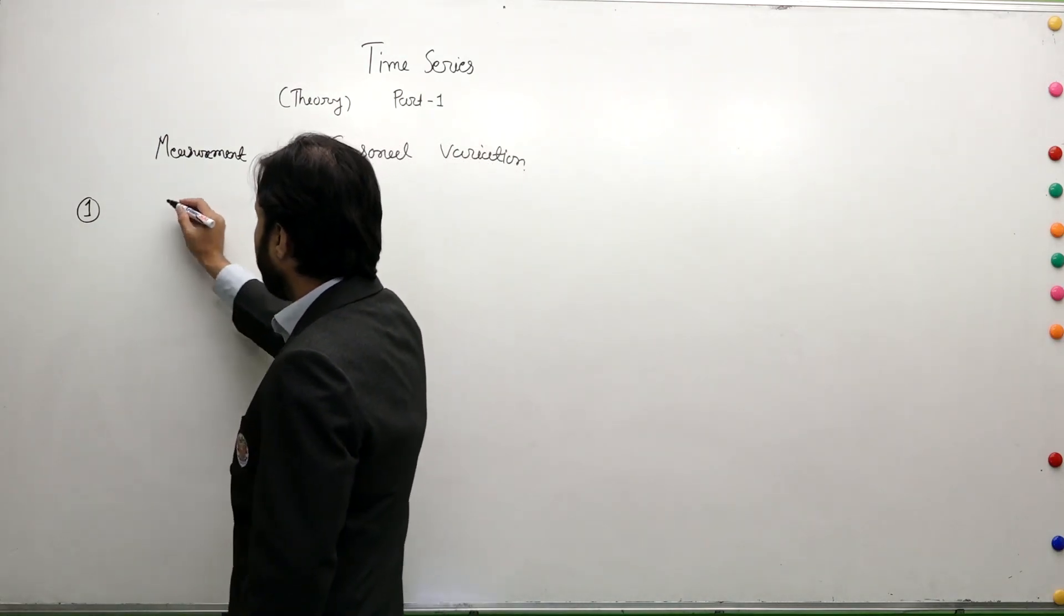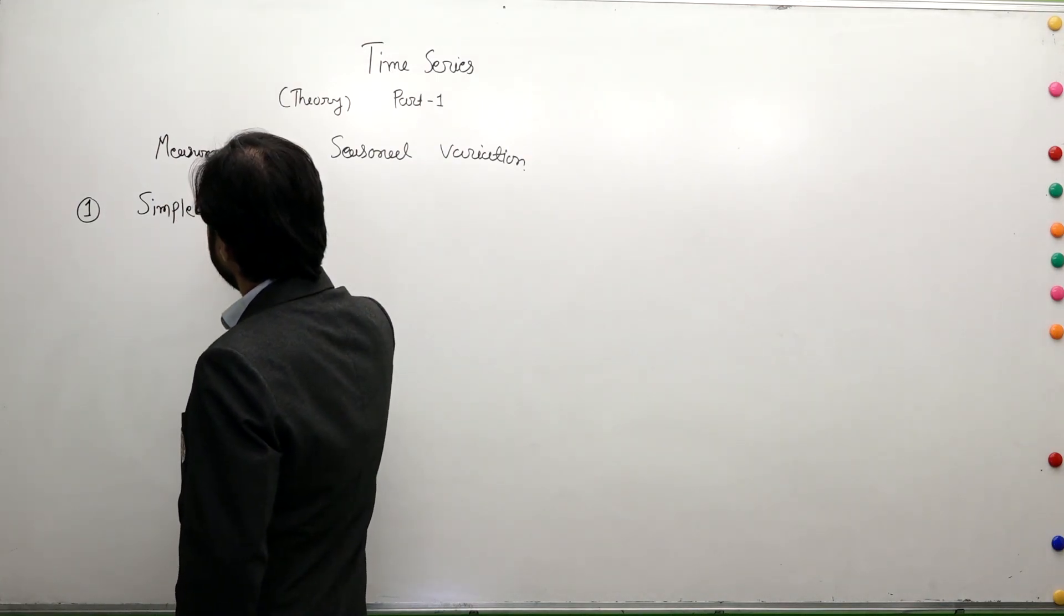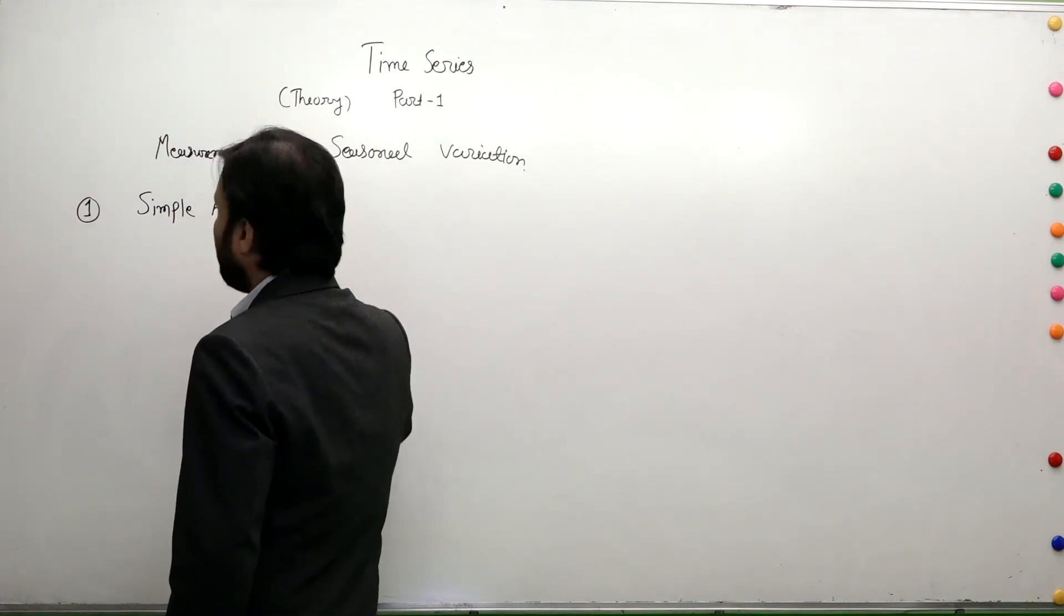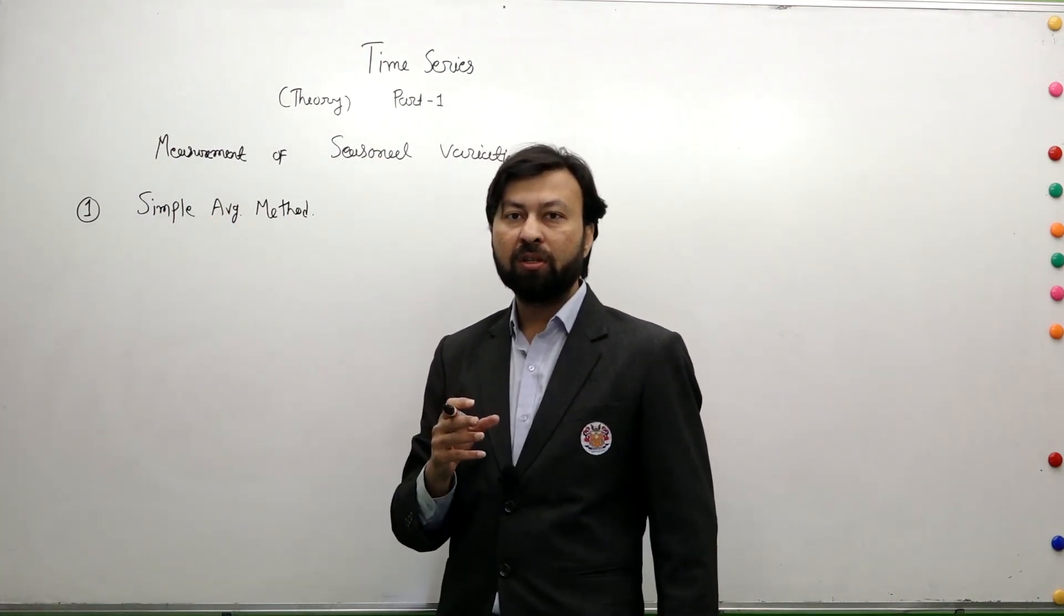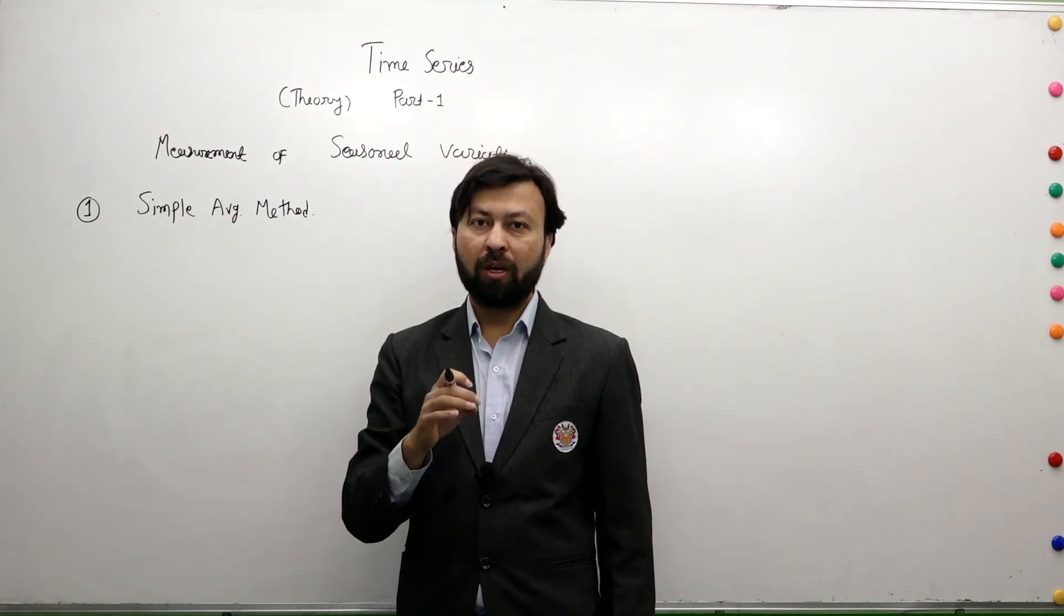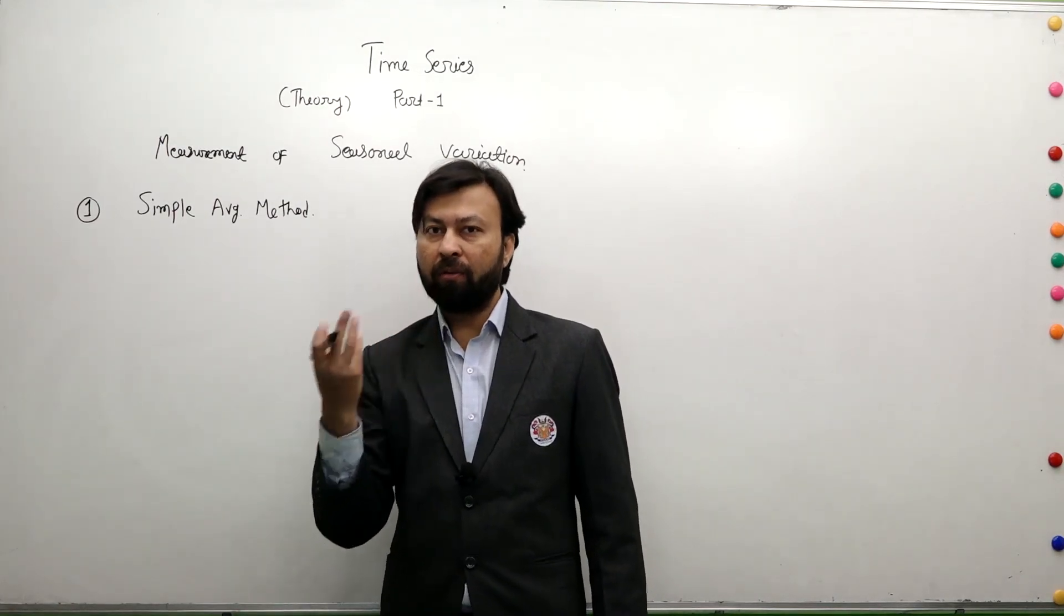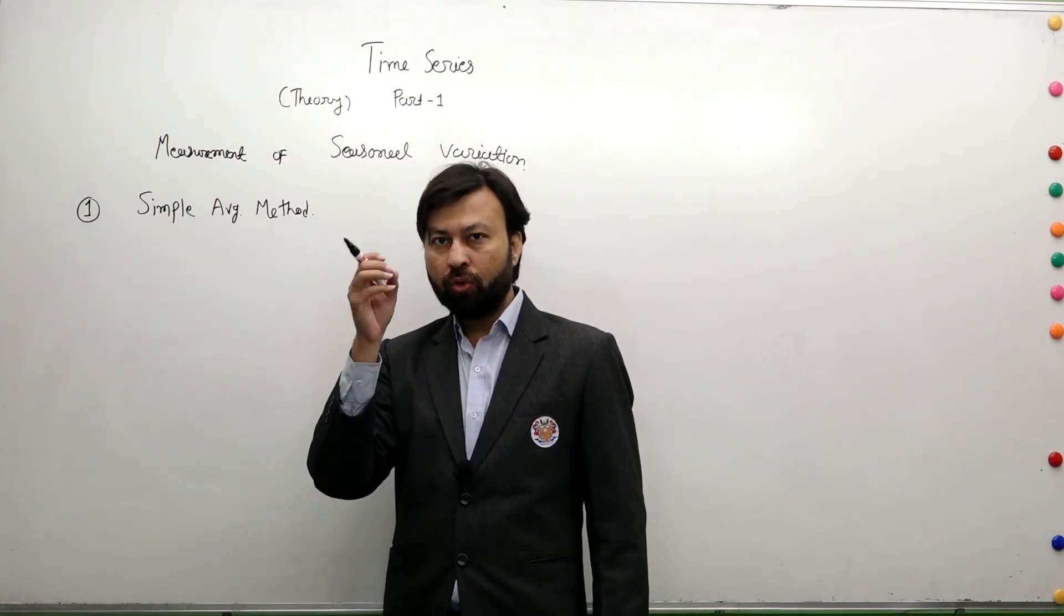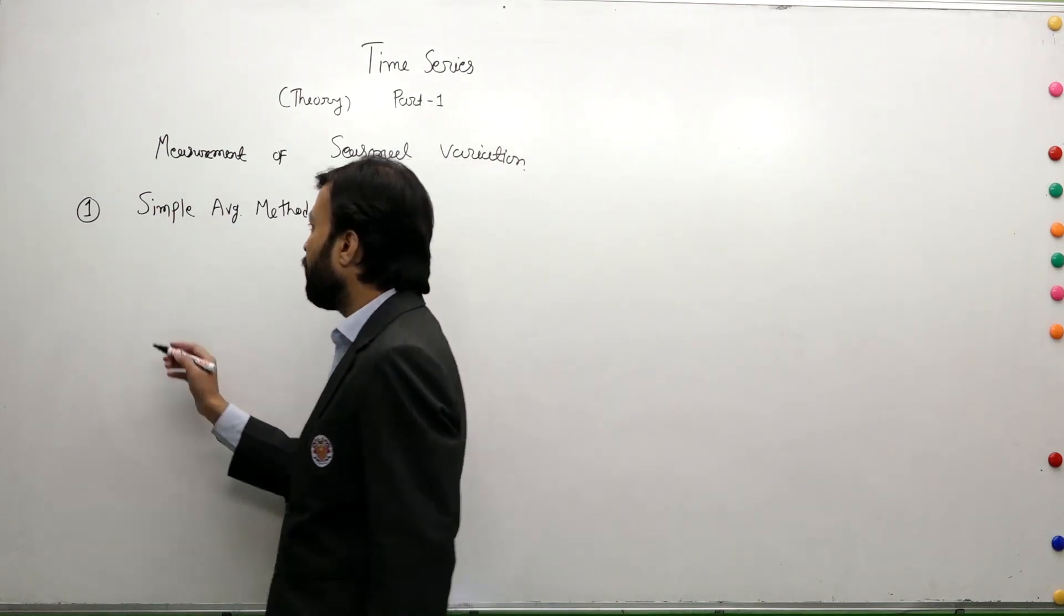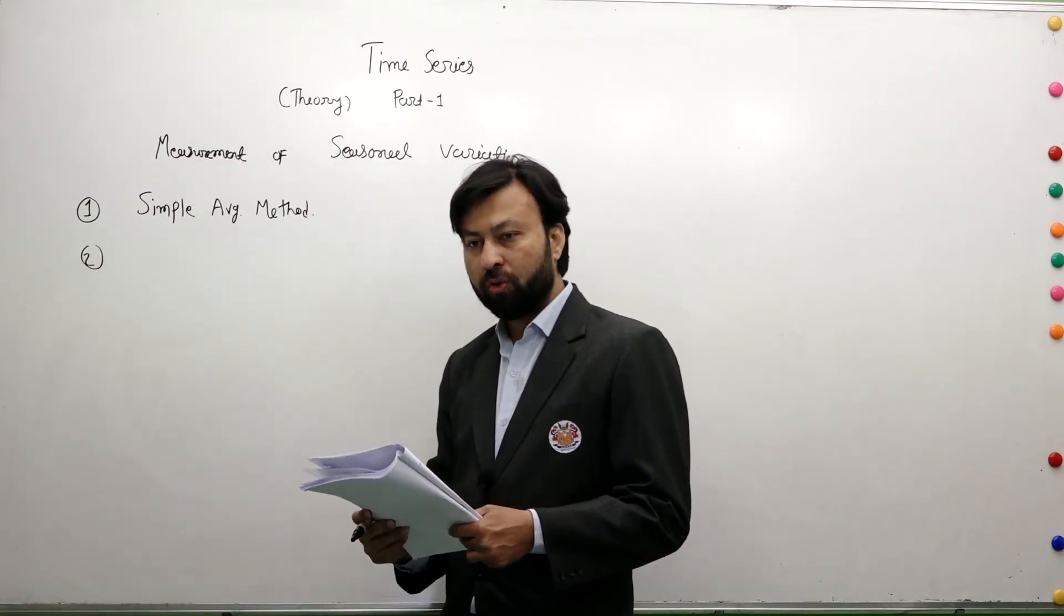First method is Simple Average method. The second method is the ratio to trend method.